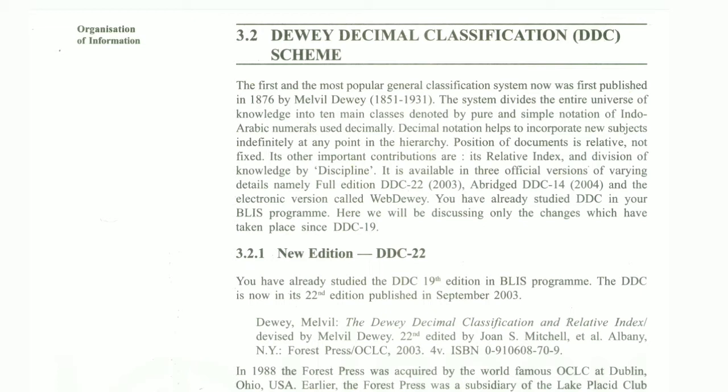The first and most popular general classification scheme was published in 1876 by Melvil Dewey. The system divided the entire universe of knowledge into 10 main classes, from 000 to 900. It was denoted by pure and simple notation of Indo-Arabic numerals used decimally. Decimal notation helps incorporate new subjects at any point in the hierarchy.